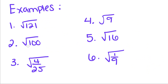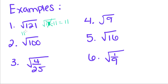Now we're going to do some examples. The square root of 121 — well, this is just saying the square root of 11 times 11. So when you take this square root, you get rid of one of those 11s and you just get one 11, because this is saying if I squared 11 I would get 121, which is true.